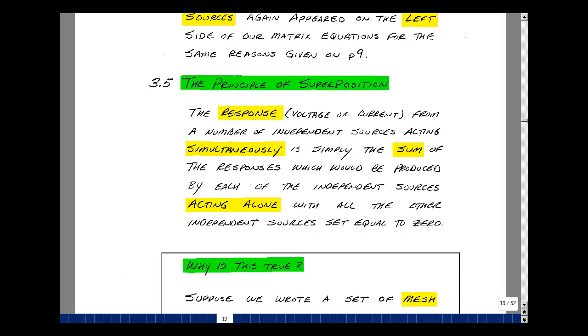Suppose I had a circuit where I was solving for Vout, and I had three sources, maybe two voltage sources and a current source. What this theorem is saying is that I can find Vout by adding up three results. The first one is to set all but one source equal to zero and find Vout.